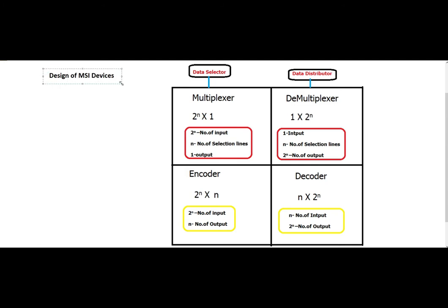I use this memory aid: M for many-to-one, so the multiplexer has 2 power n number of inputs and only one output. The demultiplexer is just the opposite of the multiplexer.